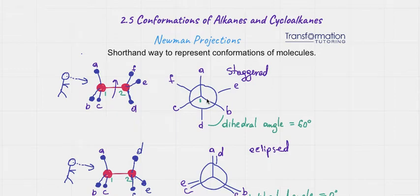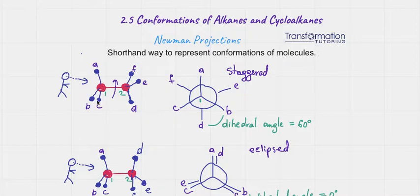Newman projections are a shorthand way to represent conformations of molecules. Let's take a look at the molecule on the left side. The red dots are carbons and the blue dots are the attachments.